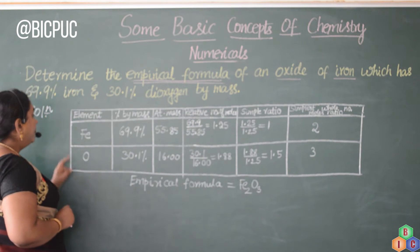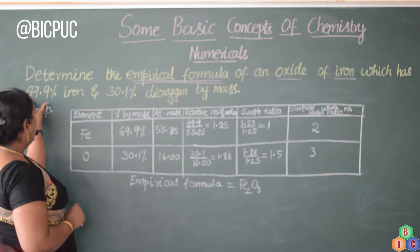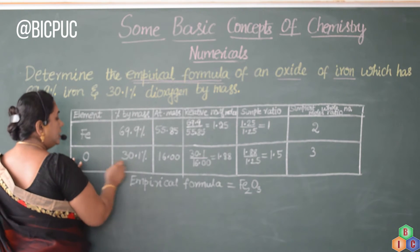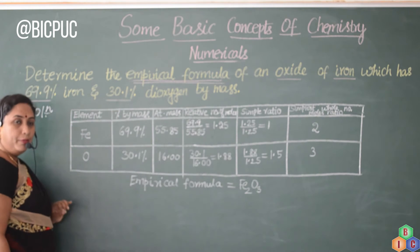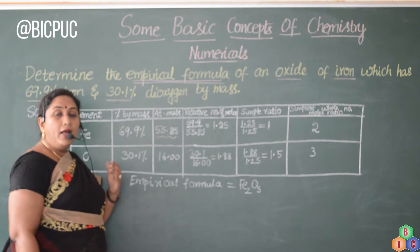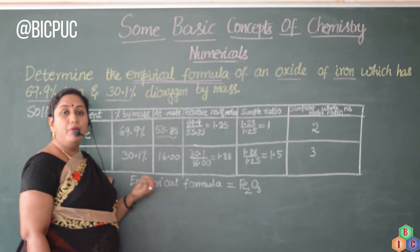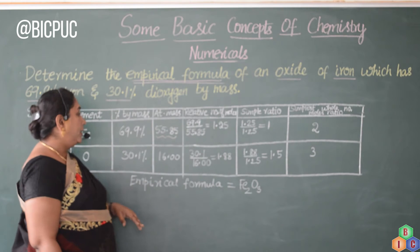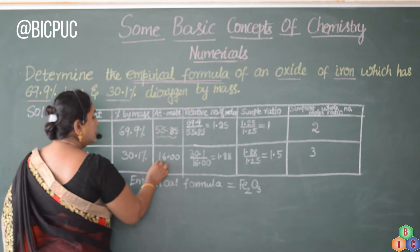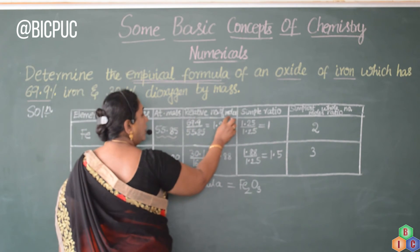Now let us start filling the table. The elements are iron and oxygen. The percentage by mass of iron is 69.9% and for oxygen it is 30.1%. The atomic mass of iron is 55.85, and the atomic mass of oxygen is 16.